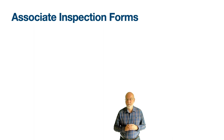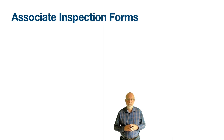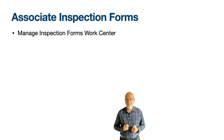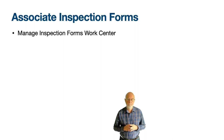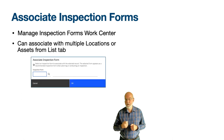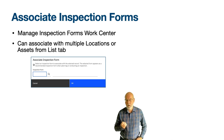The inspection form can contain groups of questions, and one answer may raise an additional set of questions conditionally. A library of inspection forms is created using the work centre application manage inspection forms. Inspection forms can be associated with a job plan, a route stop, or several places in the work order tracking application. You use the associate inspection form action in the locations and assets application to indicate the recommended set of inspection forms for the location or asset.